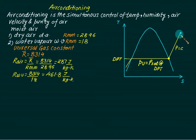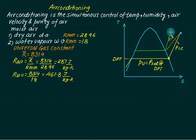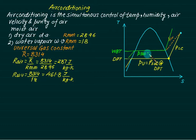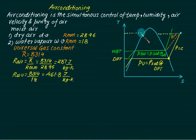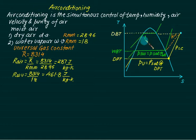If you cool air at constant enthalpy, the corresponding temperature is called the wet bulb temperature, and its saturation pressure is P_sw (saturation pressure at wet bulb temperature). If you move along a horizontal isothermal process line, the temperature recorded is called the dry bulb temperature, with its corresponding saturation pressure P_sd.